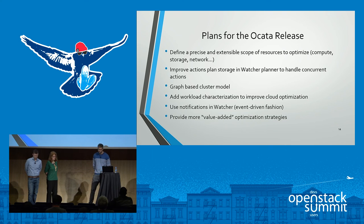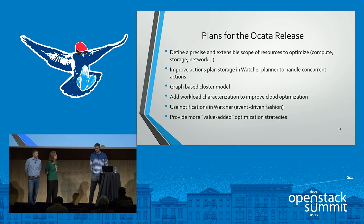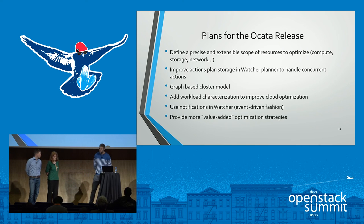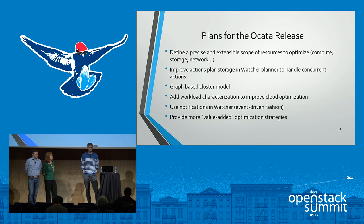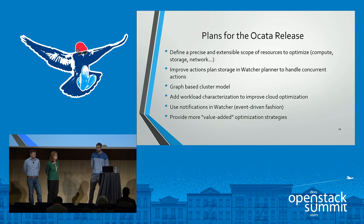We also want to use notifications in Watcher. Right now when we perform an action, other OpenStack components are not aware of it — for example, Watcher wants to be aware when applying an action plan, and Nova wants to know what we're doing. We want all OpenStack components to be able to react to Watcher events in an event-driven fashion. And as always, we want to add many new strategies. Watcher's pluggable architecture means if you have an optimization problem, we think Watcher is the best place to solve it.